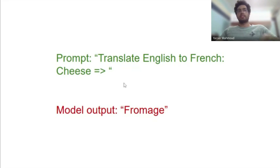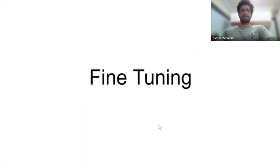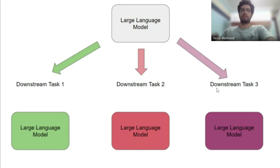Normally we take these foundation models and start tuning them to specific downstream tasks. This sheds light on the reasoning behind the name 'foundation models' — you have a base that you're building upon. This takes us to the next phase: fine-tuning. Traditionally, you would have a large language model and fine-tune it by training all of the parameters for each downstream task, ending up with a separate model for each task.